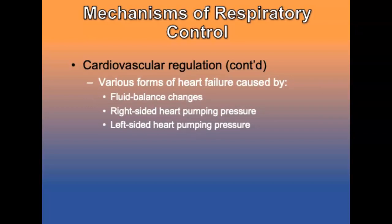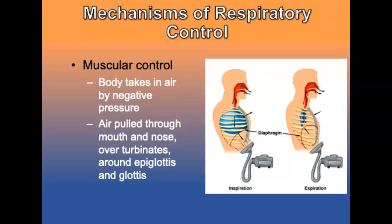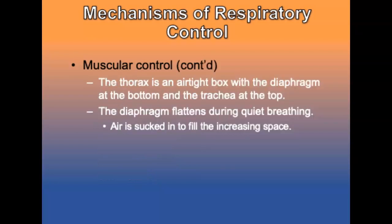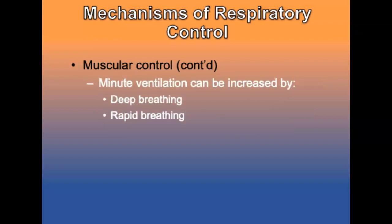Various forms of heart failure can cause changes in fluid balance, right-sided or left-sided heart pumping pressure. The body takes in air by negative pressure — like a vacuum cleaner — with air pulled in through the mouth, nose, or around the epiglottis and glottis. The thorax is an airtight box with a flexible diaphragm at the bottom and an open tube at the top. The diaphragm flattens during quiet breathing, increasing the container size, and air is sucked in. The minute ventilation can be increased by deep or more rapid breathing.